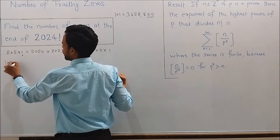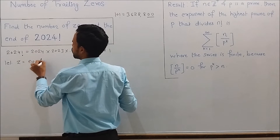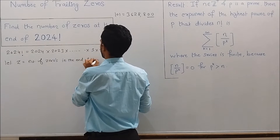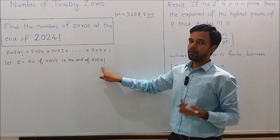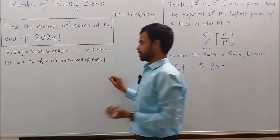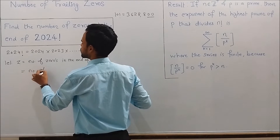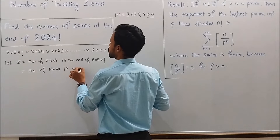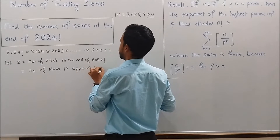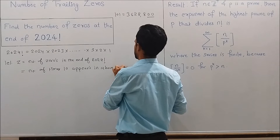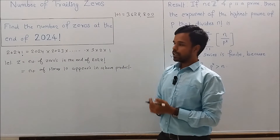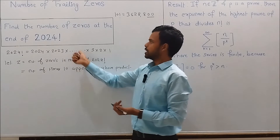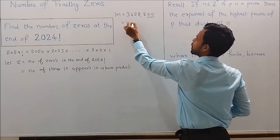Let z denote the number of zeros at the end of 2024 factorial. This quantity is the same as the number of times 10 appears in the above product. That is, the number of trailing zeros in 2024 factorial equals the number of times 10 appears as a factor in the product.